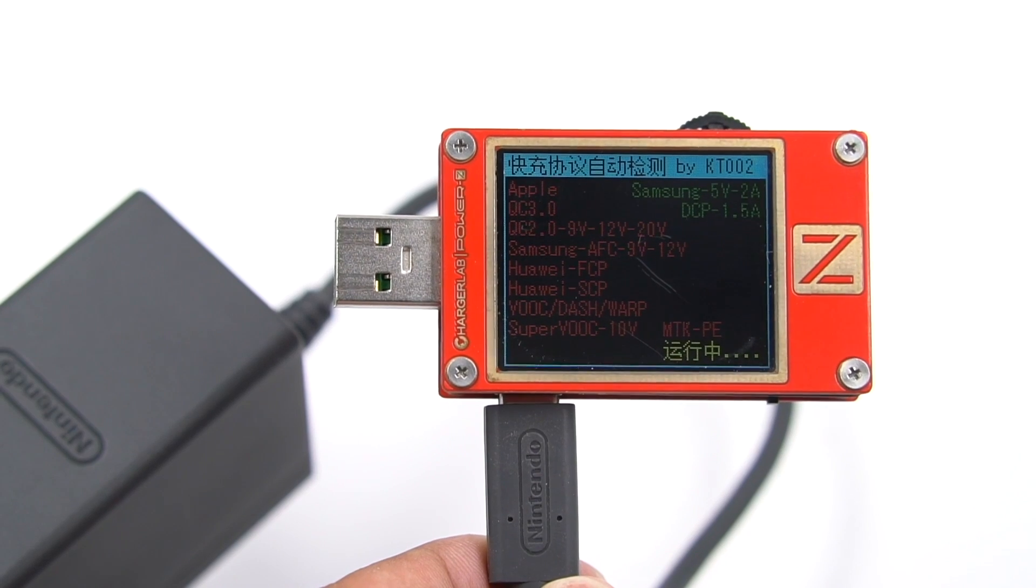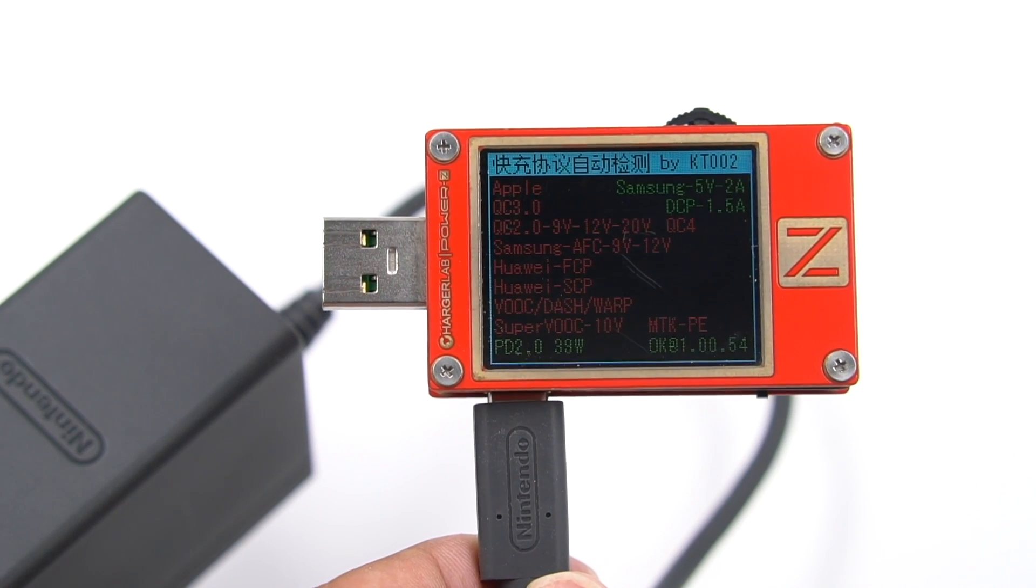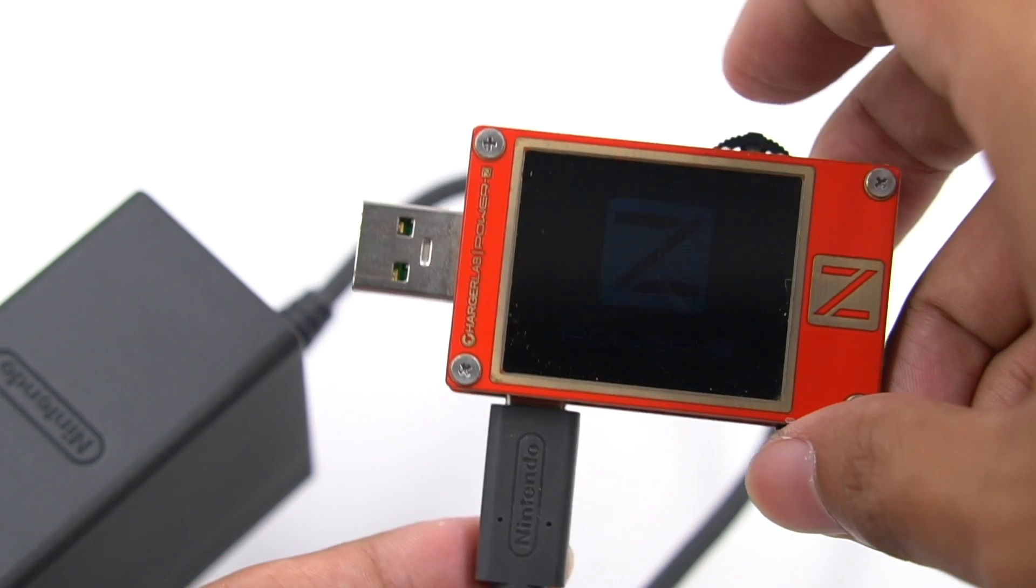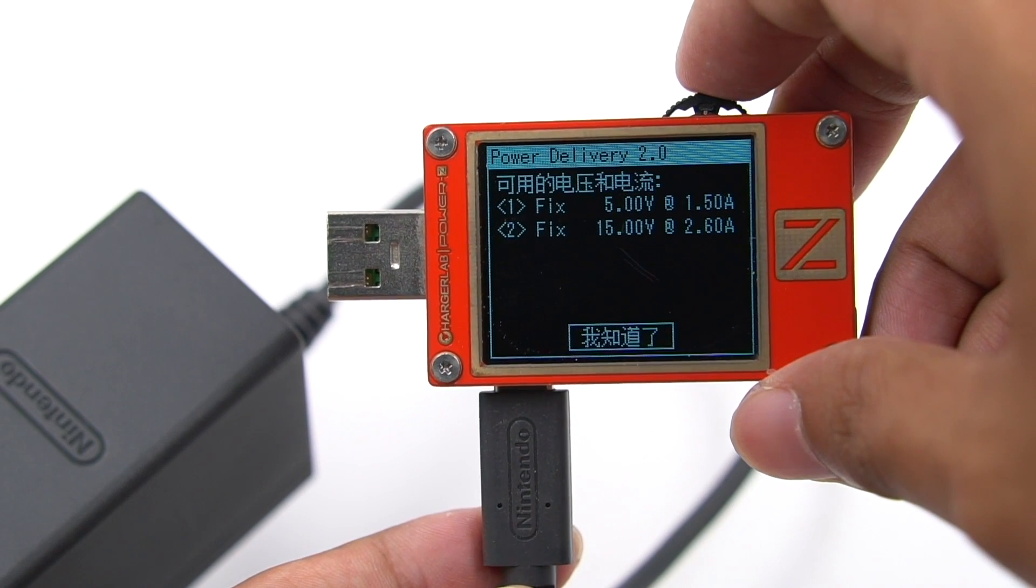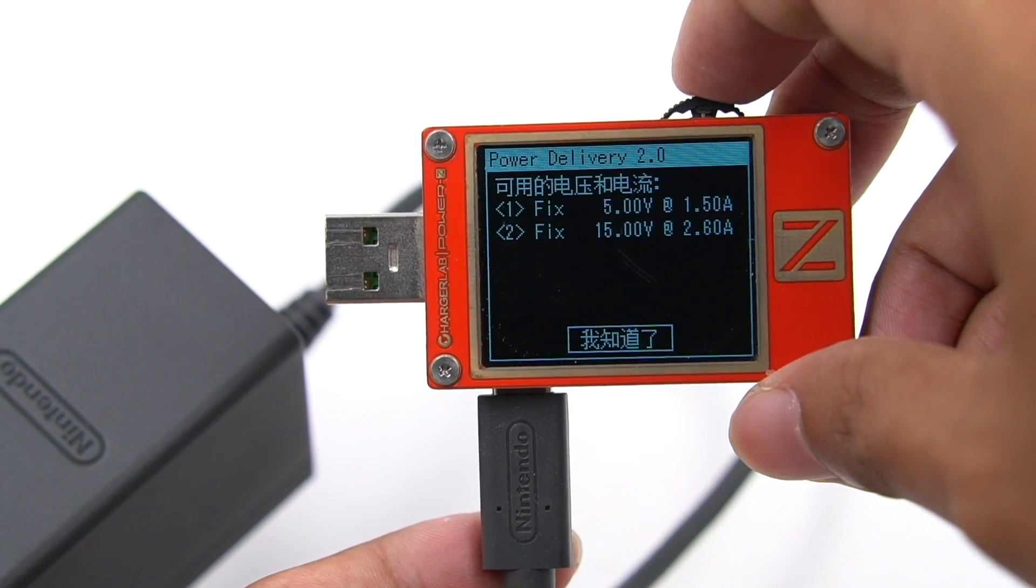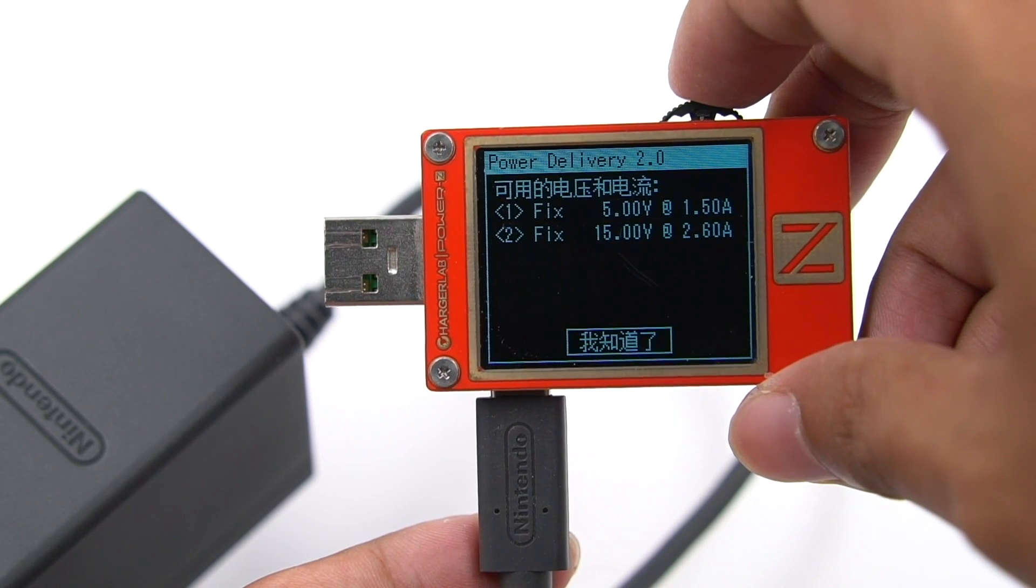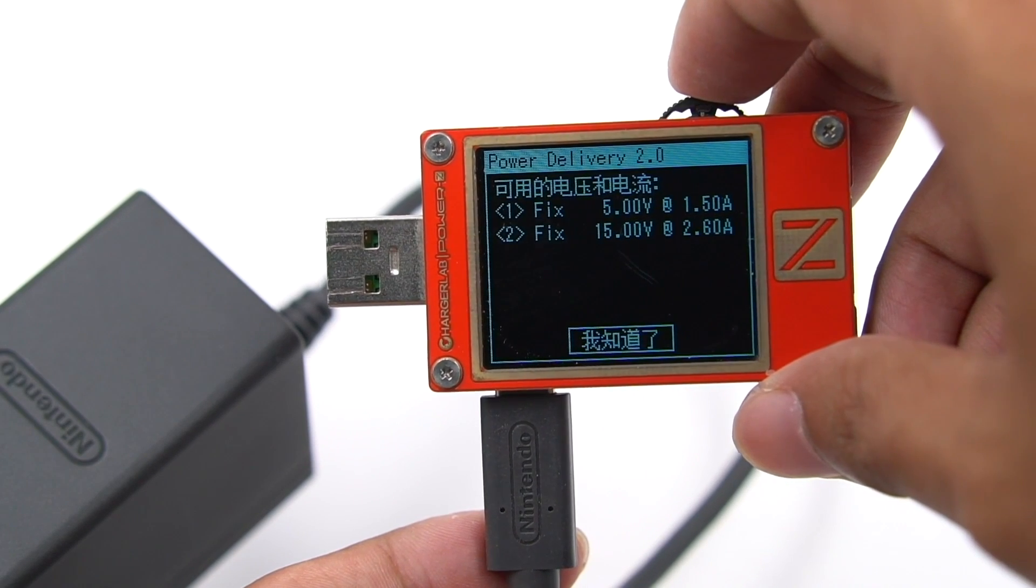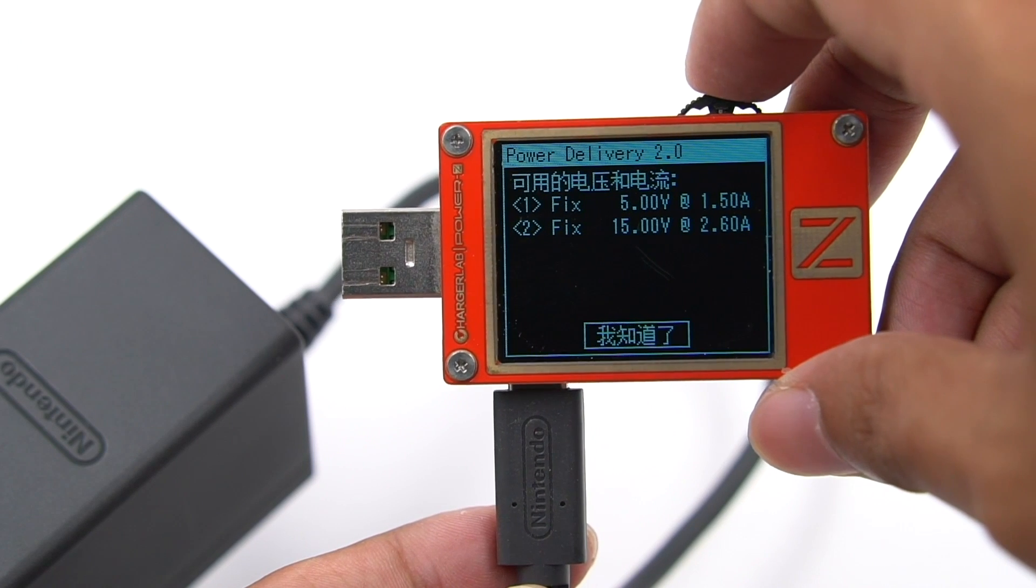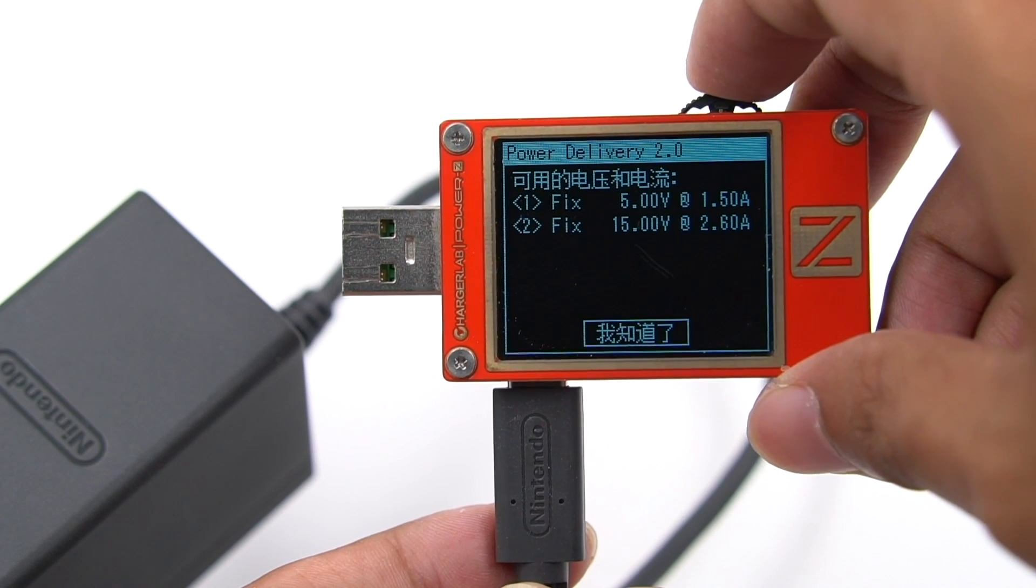The charger with Power-Z shows it only supports PD 2.0 and DCP. And it also supports two fixed PDOs: 5V 1.5A and 15V 2.6A. We must need to know, the third-party charger needs to support 15V. And the highest current is greater than or equal to 2.6A under 15V mode. Only this way can this charger support the TV mode.